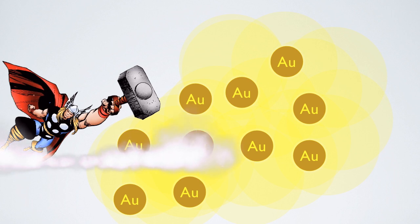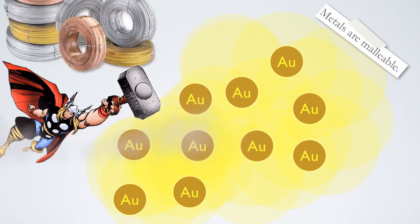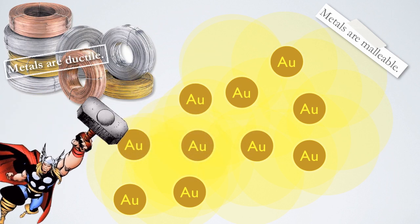This is because the metallic bond allows for the lattice of positive ions to shift or change shape a little bit without breaking the bonds. This is why metals are malleable. It's also why they are ductile, which means they can be drawn into wires.